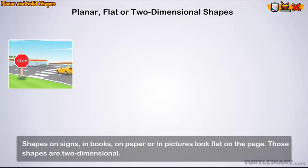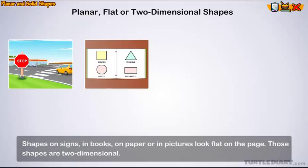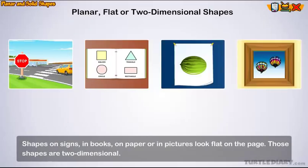Shapes on signs, in books, on paper, or in pictures look flat on the page. Those shapes are two-dimensional.